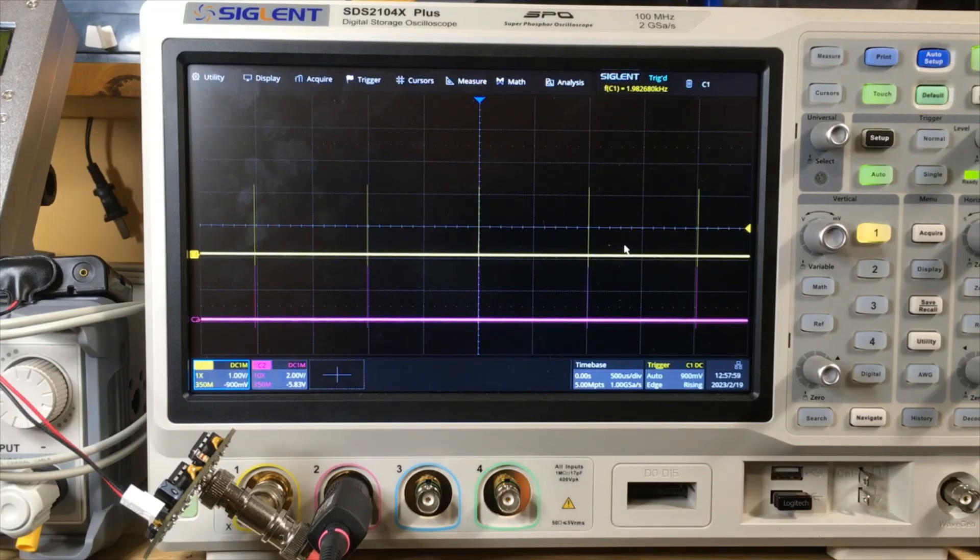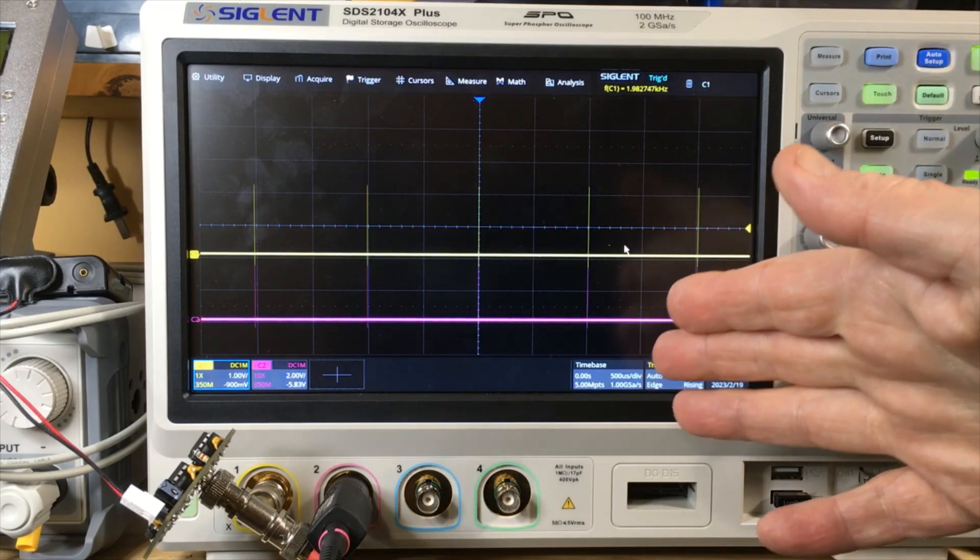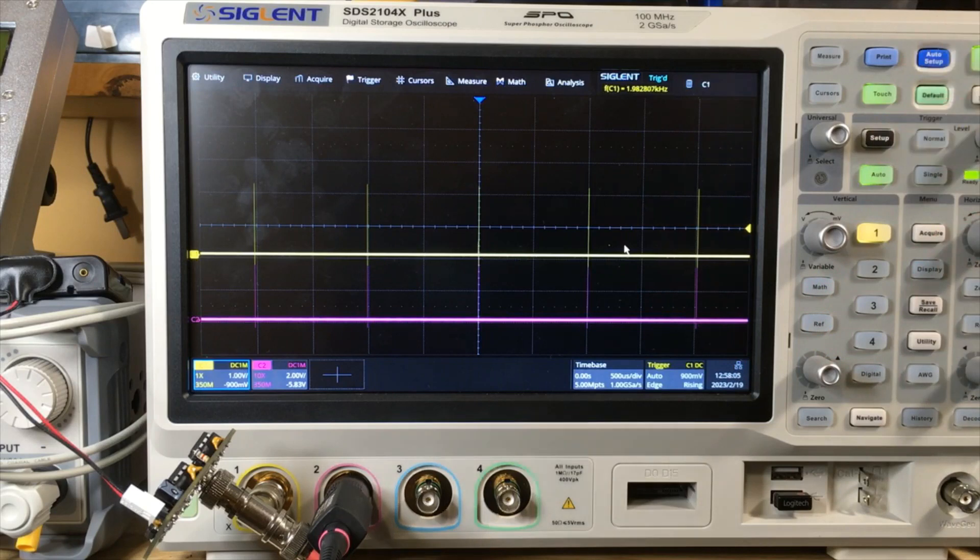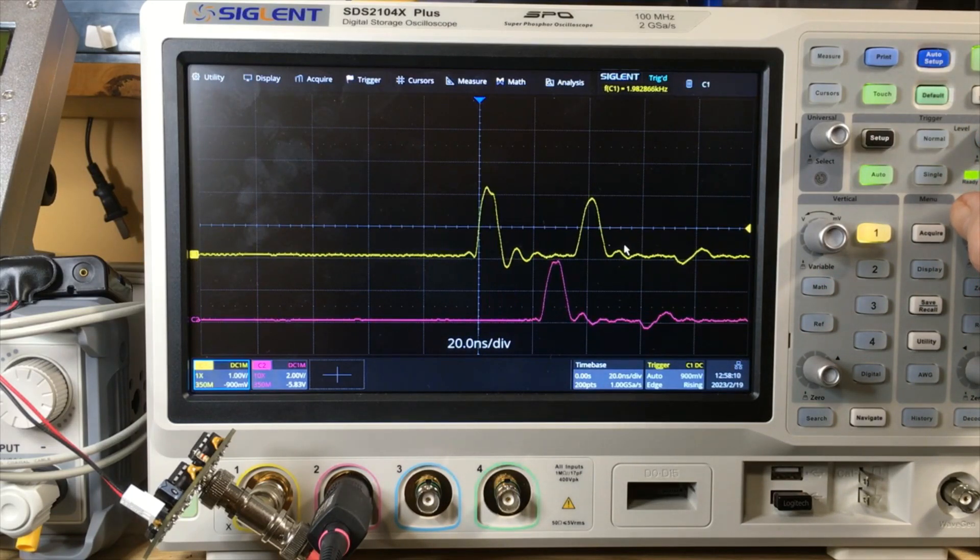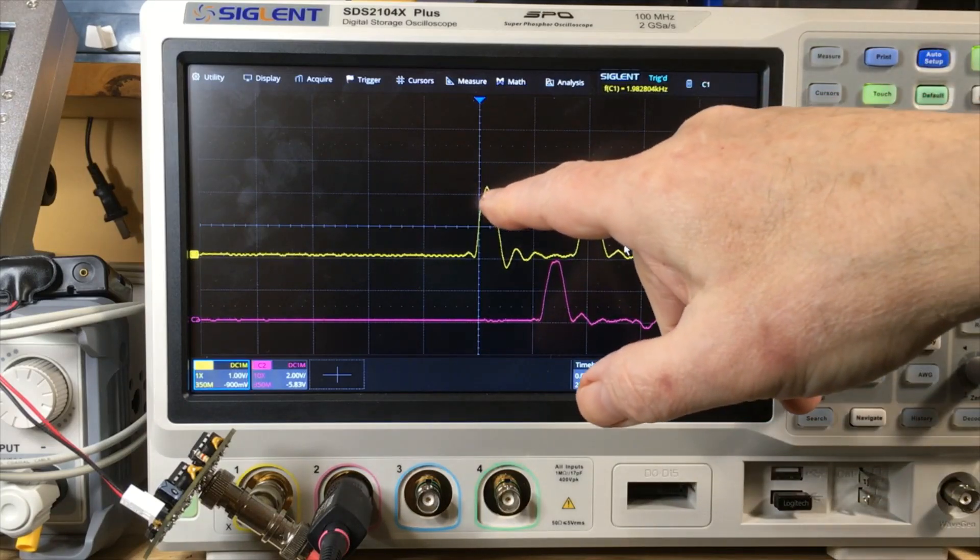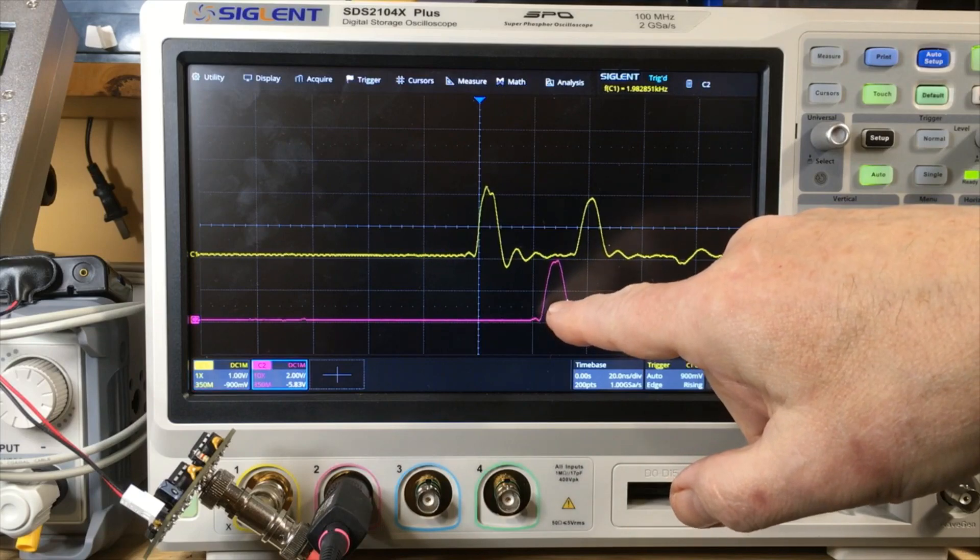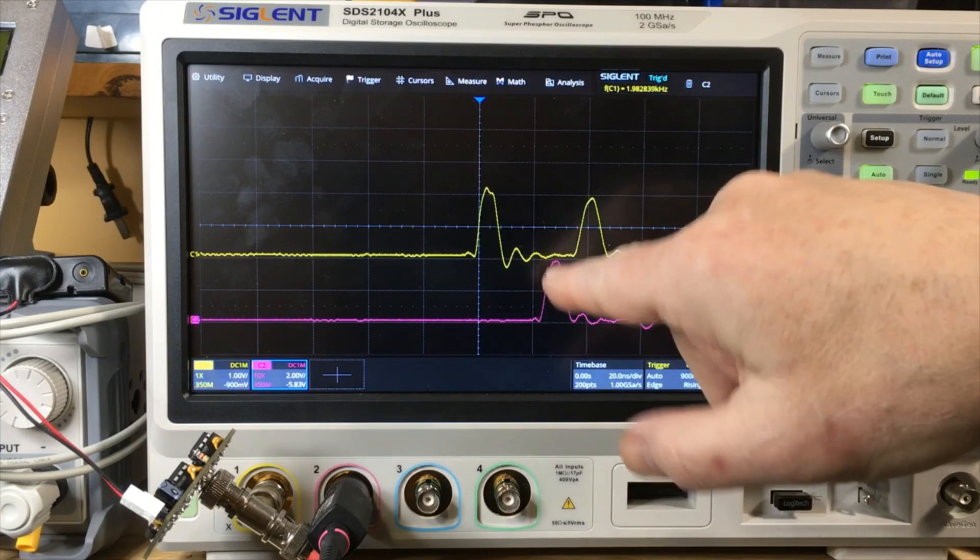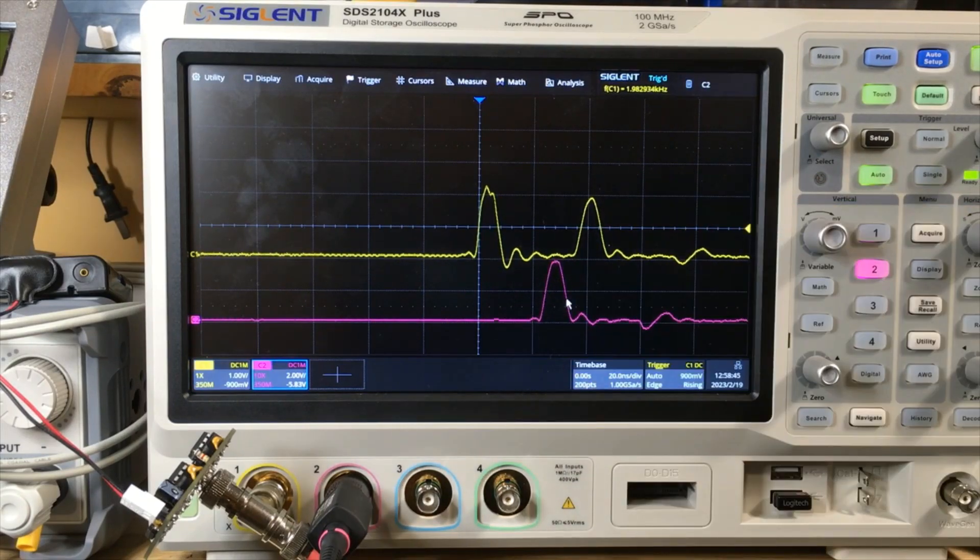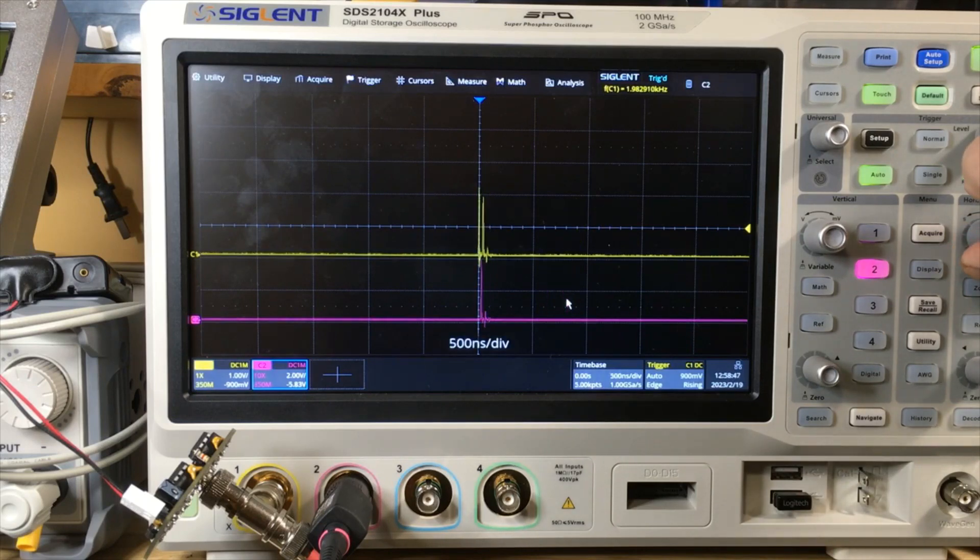We can't see that here right now, so one way you could do it is just change the time base until you can see what you want. Now we have the initial pulse, the reflection, and here's channel two picking up the pulse down at the end of the cable.